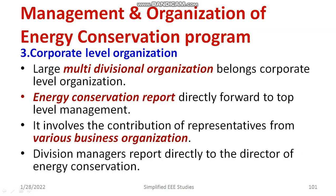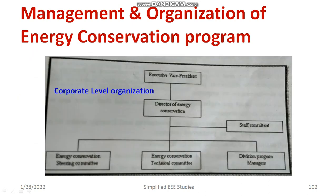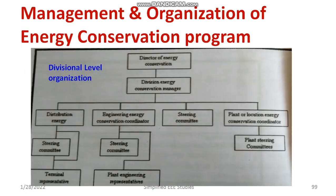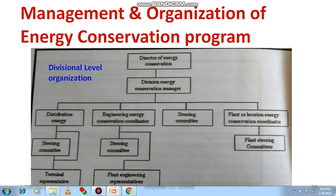This structure is applicable for large multi-divisional organizations. Energy conservation reports are forwarded directly to top-level management. It involves the contribution of representatives from various business organizations. The divisional managers report directly to the director of energy conservation, whose role is to evaluate the entire program for the particular year — this happens on a yearly basis.